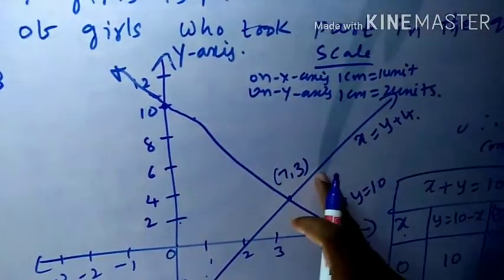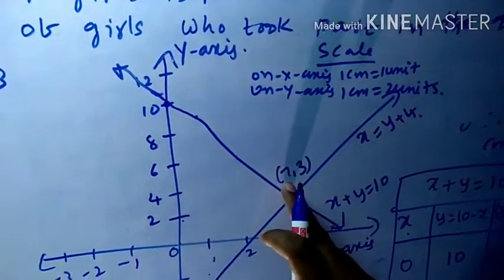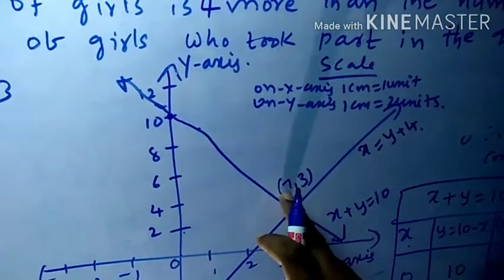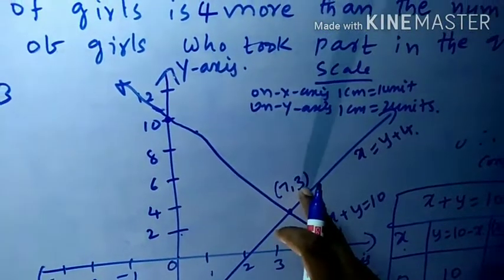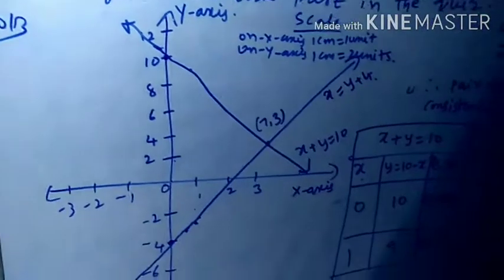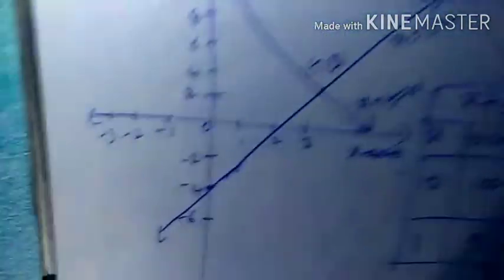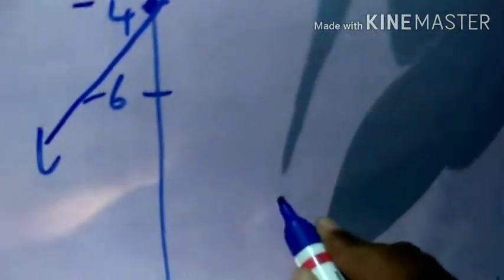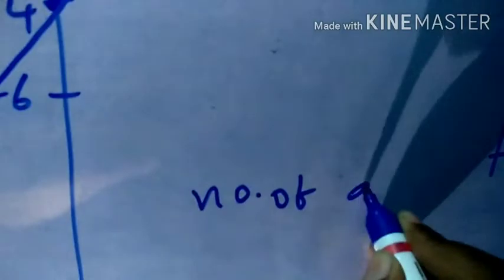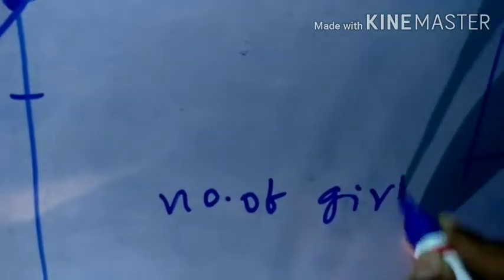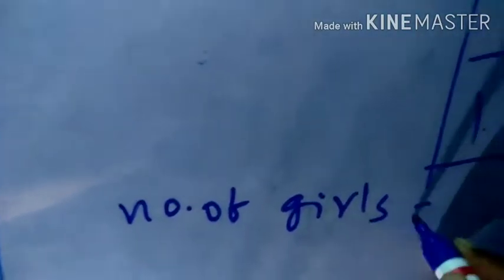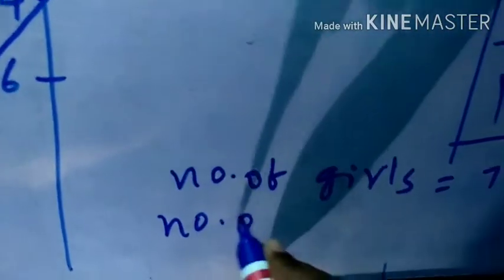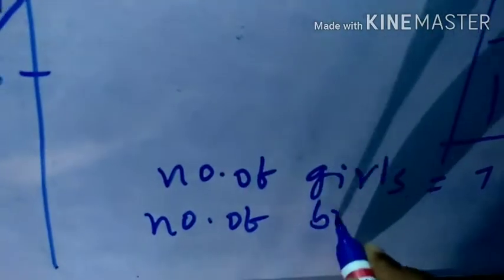We can verify: 7 plus 3 is 10, and the number of girls is 4 more than the boys. So the number of girls is equal to 7.